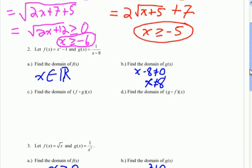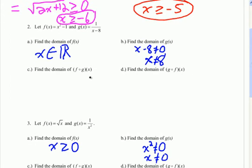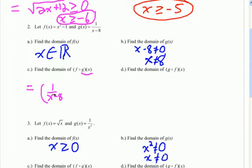Let's try number 2. We'll start with f of g of x. So first, what is the domain of g of x? We can see g of x is a rational function because it has a variable in the denominator, and we know the denominator can't equal zero. Setting the denominator equal to zero and solving, we find that x can't equal 8. Now we're going to compose the two functions — plug g of x into f of x — and we get 1 over (x minus 8) squared minus 1.